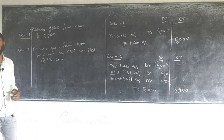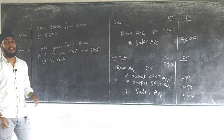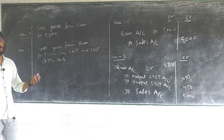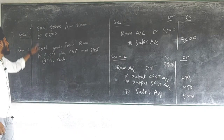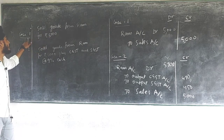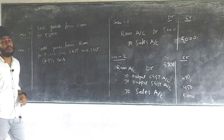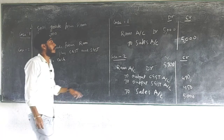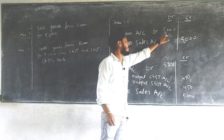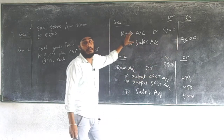Now let us see the transaction related to sales — how we treat GST when there is a sale. Case one: sold goods to Ram for rupees 5000. The entry is Ram Account debit, to Sales Account — 5000 on each side. This is the normal entry without GST.